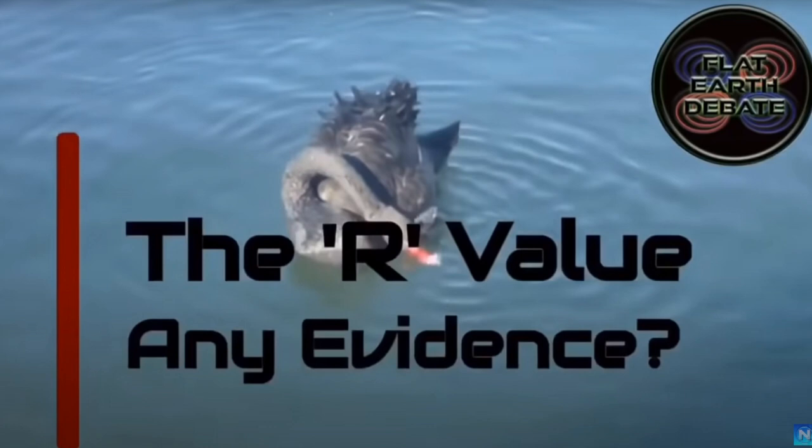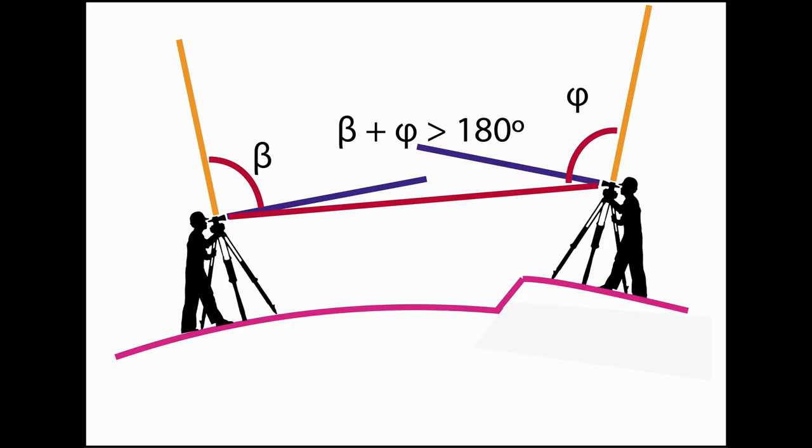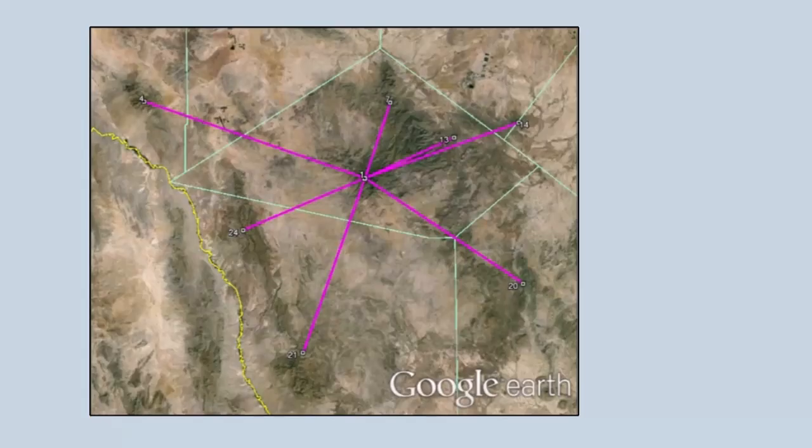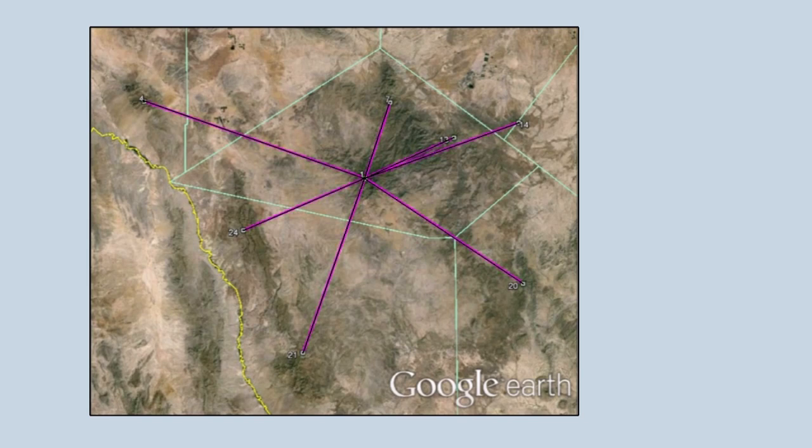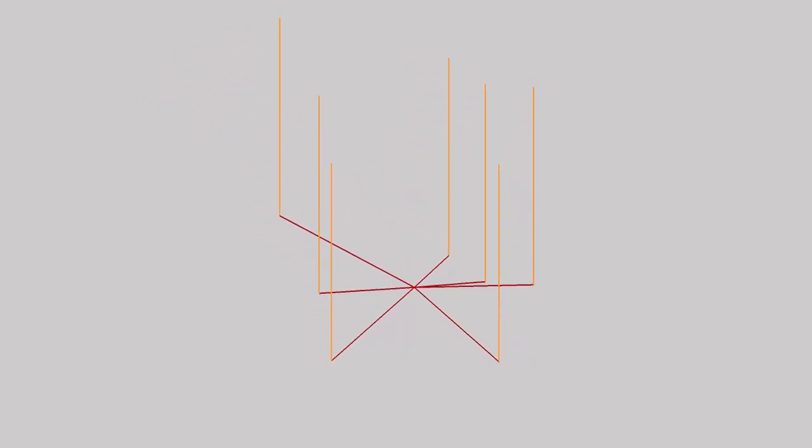In my previous video I showed the reciprocal zenith measurements that gave strong evidence that the world cannot be flat. These measurements were taken from one point to seven other points at different distances. When we plot the measured angles at those points relative to the vertical on a flat plane and extend the lines downward, we can see that they more or less meet at one point straight beneath the first observer point.